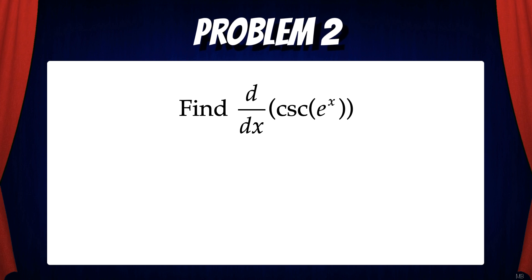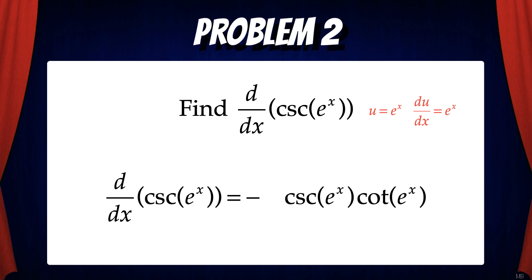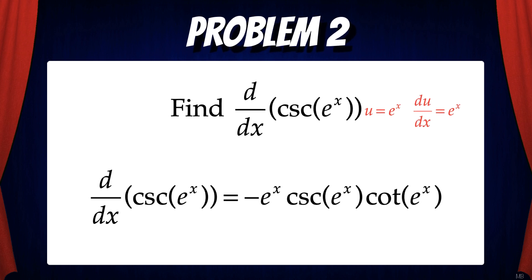Let's look at another problem. Suppose we want to find the derivative of cosecant(eˣ). Take a moment and try the problem for yourself first before viewing the solution. Here we can see that eˣ is the inner function, so we'll let u equal eˣ. That means du/dx is also eˣ. So the derivative of cosecant(eˣ) is negative cosecant(eˣ) times cotan(eˣ), multiplied by du/dx, which is eˣ. Note that I've moved the eˣ to the front so that the final solution looks clean.